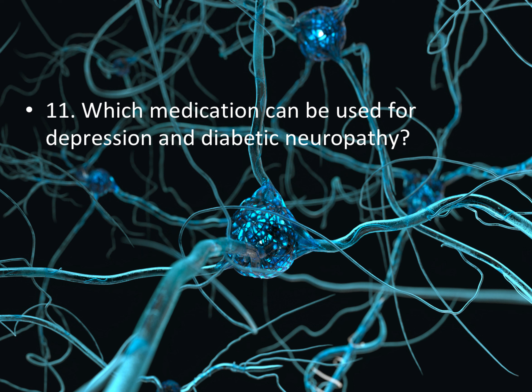Question eleven: which medication can be used for both depression and diabetic neuropathy? They'll give you a long-stem scenario and ask which medication is best prescribed. The answer is duloxetine. The way I remember this — 'duo' — duloxetine has a duo effect: it treats both depression and neuropathy. So if they tell you a patient is diabetic and now depressed, you're looking for the duo-effect medication: duloxetine.